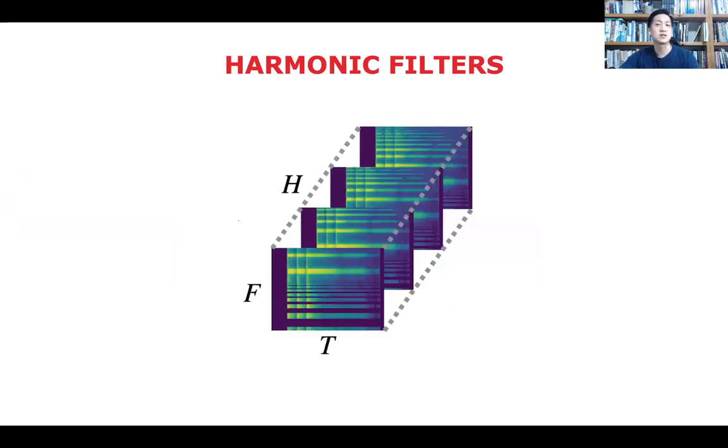Then by stacking these harmonic representations, we can get the 3D tensor. These 3D tensor representations can keep spectrotemporal locality while preserving the harmonic structure through the Z axis. A small 3 by 3 convolution filter can capture spectrotemporal and harmonic information at once.